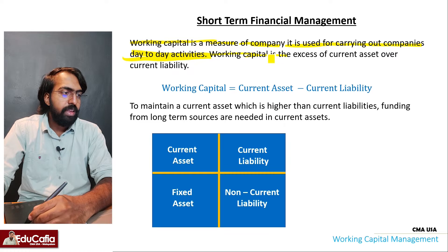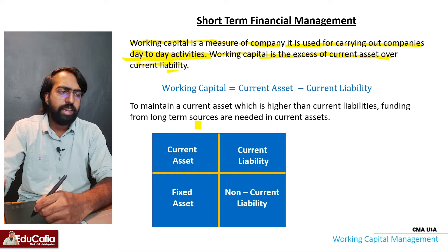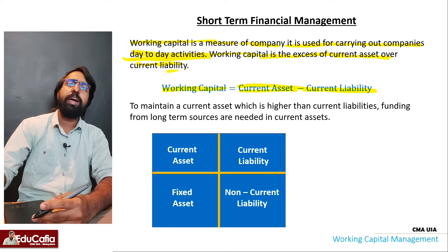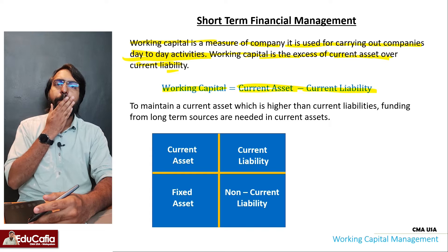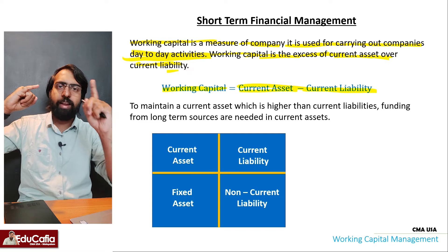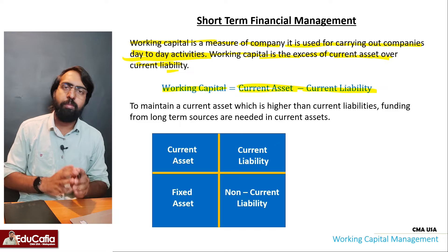Working capital is the excess of current assets over current liabilities. This is the working capital equation: Working capital equals current assets minus current liabilities. In a company's balance sheet, there are four sections: current assets, current liabilities, non-current assets, and non-current liabilities.